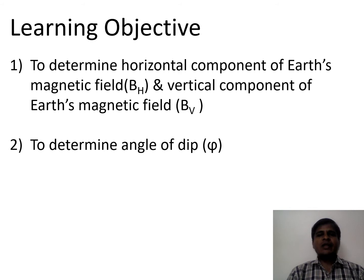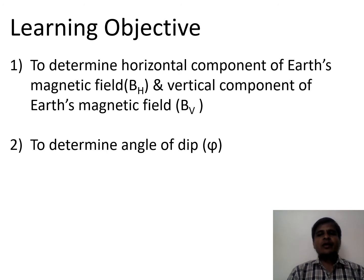The learning objectives of this session are: first, to determine the horizontal component of Earth's magnetic field, that is BH, and vertical component of Earth's magnetic field, that is BV. The second objective is to determine the angle of dip, that is psi.